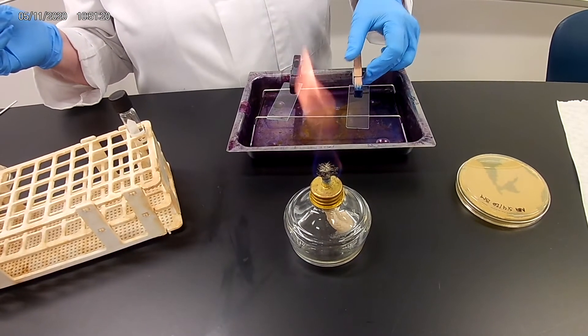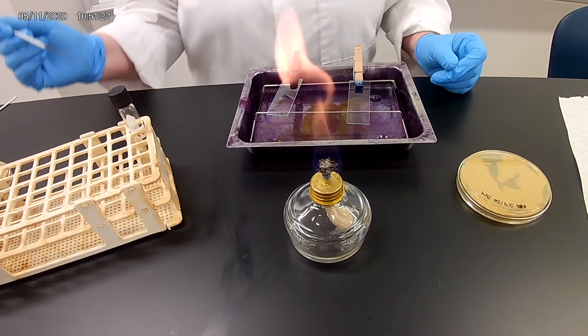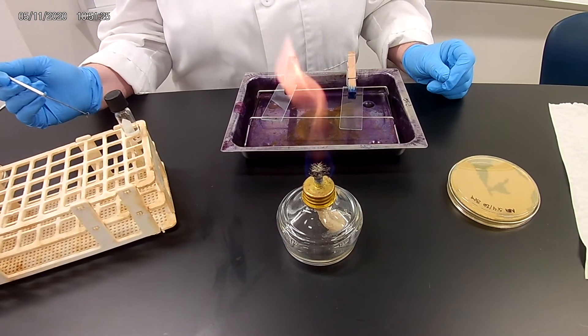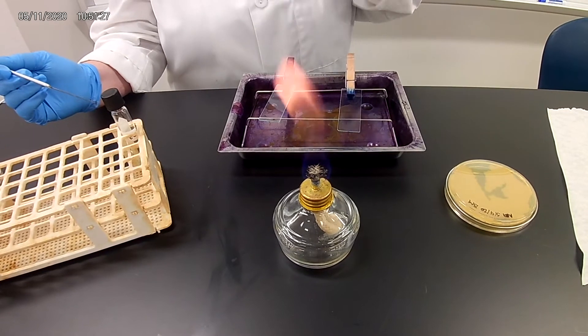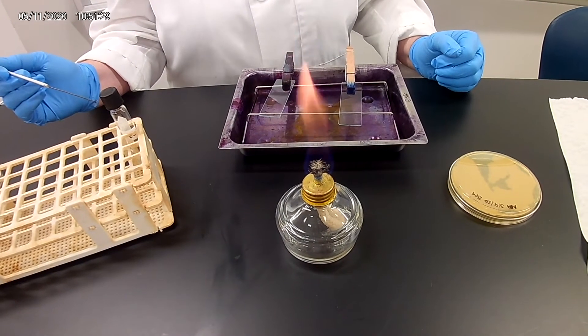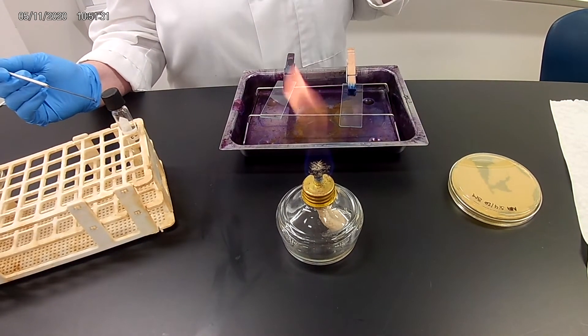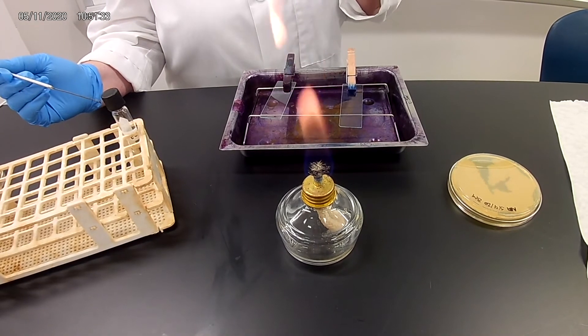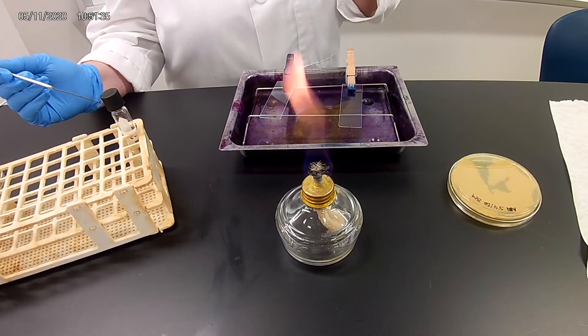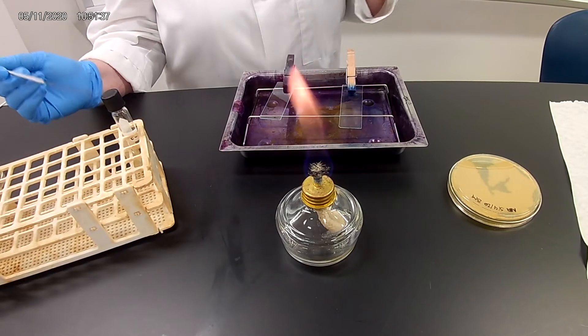What that heat fixing is going to do are three things. It's going to kill the organism on the slide. It is going to help adhere or stick the organism to the slide. And it's also going to make the cell wall, the bacteria, more permeable for the stain. So the stain is going to stick better to it.